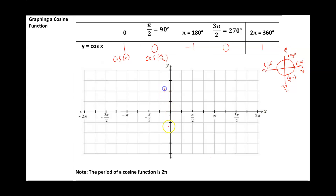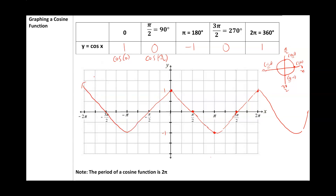So the graph of cosine looks like this. We have the points: (0, 1), (pi/2, 0), (pi, -1), (3pi/2, 0), and (2pi, 1). This is going to be one period of the cosine function. The period is also 2pi. And then this shape is going to keep continuing over and over again on both sides. The period of the cosine function, from point to point, is going to be 2pi.